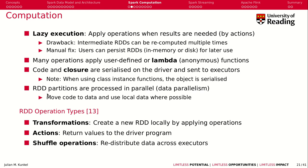Computation runs on RDD partitions in parallel. We try to reuse local partitions as much as possible, moving the code to the data instead of moving the data to the code. There are three basic types of operations on RDDs: actions, which trigger lazy execution and generate a result delivered to the driver program; transformations, which create a new RDD by applying operations on an existing RDD; and shuffle operations, which redistribute data across executors.